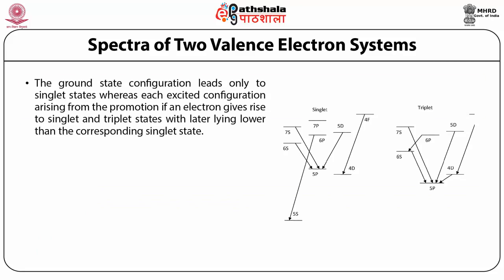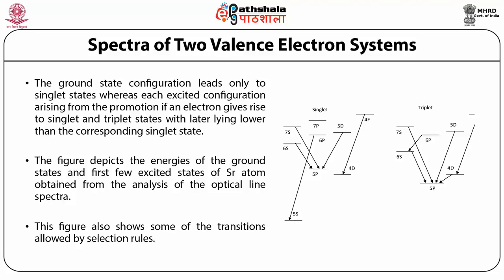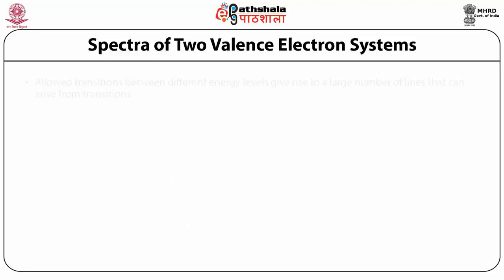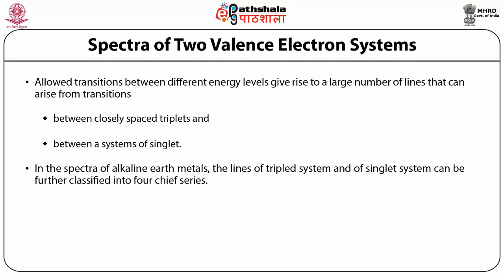The ground state configuration leads only to singlet states, whereas each excited configuration arising from promotion of an electron gives singlet and triplet states, with the triplet lying lower than the corresponding singlet. The figure depicts the energies of the ground state and first few excited states of strontium obtained from analysis of the optical line spectrum, showing transitions allowed by selection rules. The fine structure tripleting is not shown to avoid complexity. Lines can arise from transitions between closely spaced triplets and between singlets. The four chief series in alkaline earth spectra are: principal, sharp, diffuse, and fundamental.